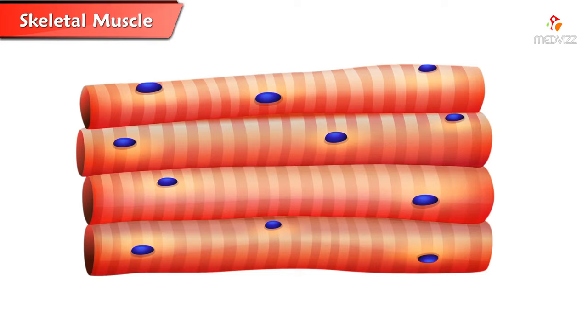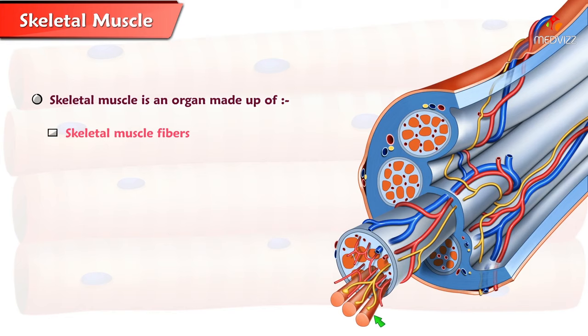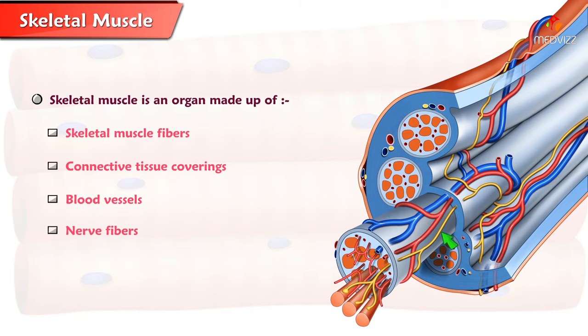Skeletal Muscle. Each skeletal muscle is an organ made up of skeletal muscle fibers, connective tissue coverings, blood vessels, and nerve fibers.